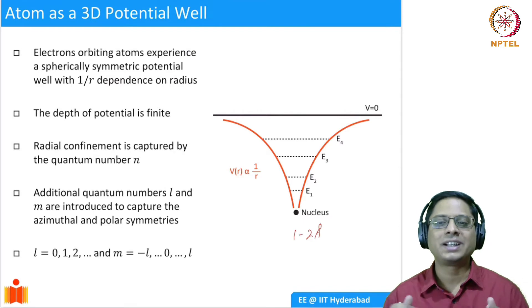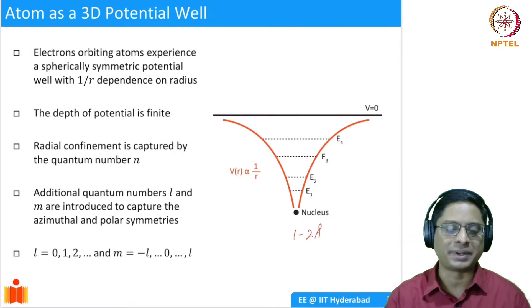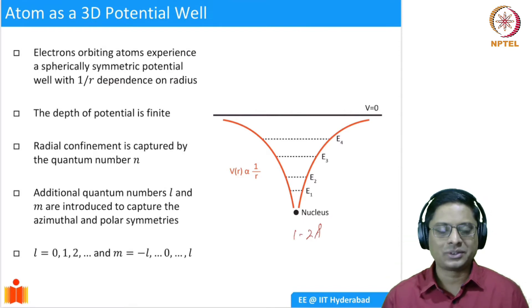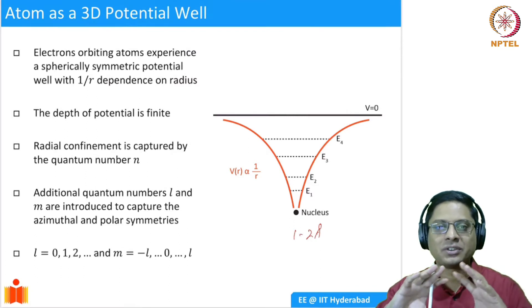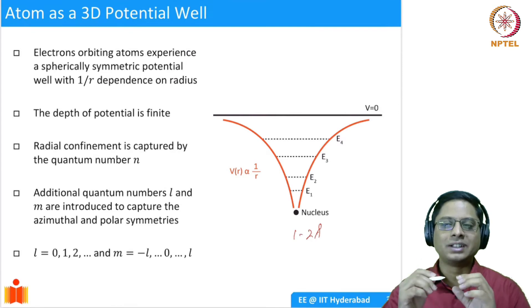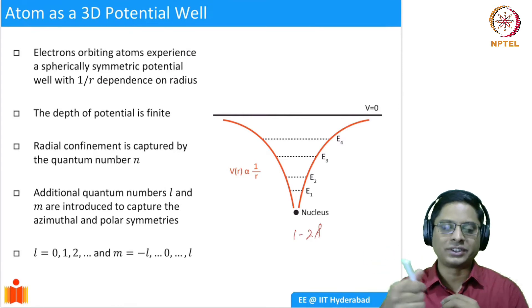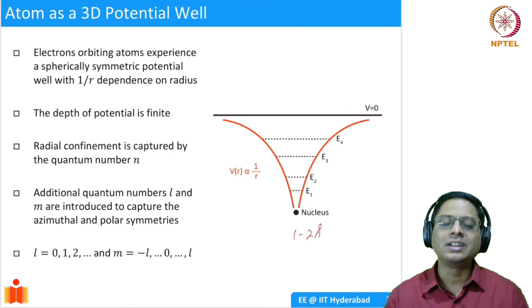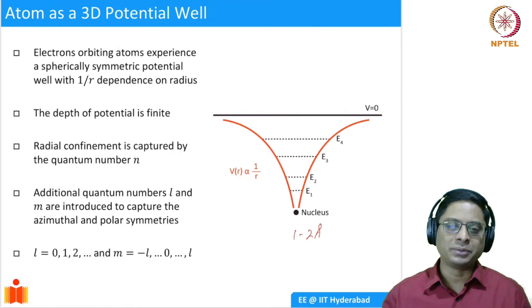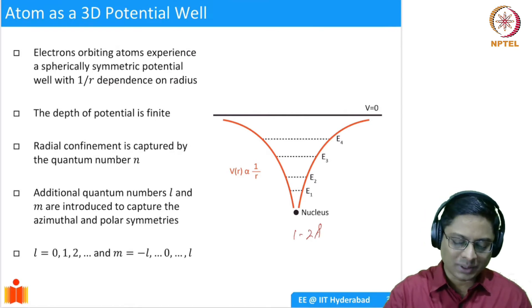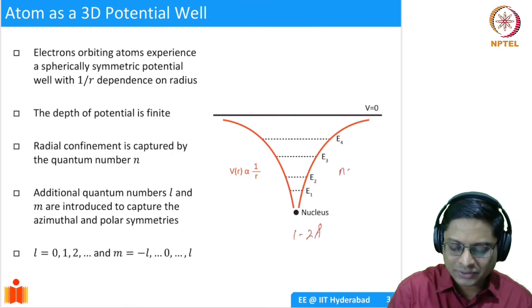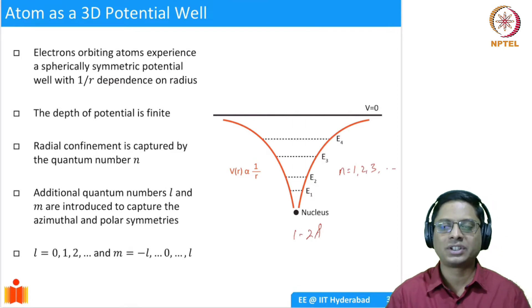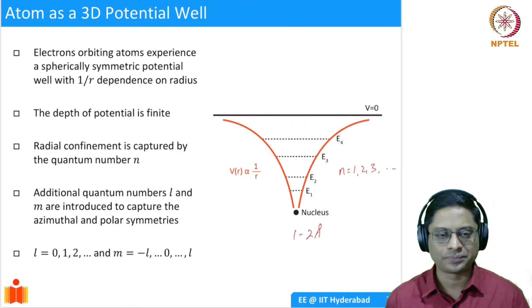What happens in that scenario? In the 1D case, we saw that there is discretization happening. In a 3D case also, something similar happens. Because now the potential is different. The potential well is actually a three-dimensional potential well. In all the r directions, in the radial directions, you have this potential well, which causes the energy to be discretized. You have quantum numbers n equal to 1, 2, 3, and so on. Similar thing happens, and you have energy levels e1, e2, e3, which are occurring within the potential well.